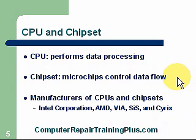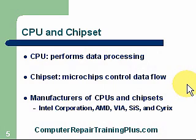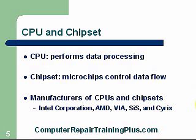CPU and chipset: the CPU performs the data processing — it processes all the data and the instructions. The chipset consists of microchips that control the data flow. They're very important because they manage the flow of data on the motherboard. Manufacturers of CPUs and chipsets include Intel, the major player with 80% of the market, and AMD, a good competitor. We also have VIA, SIS, and Cyrix.